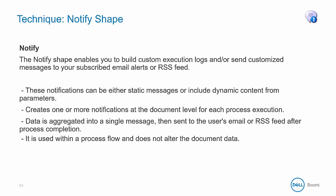Another helpful shape is the notify shape, which can also build out messages, but this one does not throw an error or stop processing. Rather, it enables you to build custom execution logs and/or send customized messages via email alerts or RSS feed. Like the exception shape, the notify shape can create messages that are either static, dynamic, or a mixture of both by using input parameters. The notify shape creates one or more notifications per document for each process execution. Data can also be aggregated into a single message and then sent to the user's email or RSS feed after the process is completed. The notify shape is meant to be used inline within a process because it doesn't alter documents or data that flows through it.